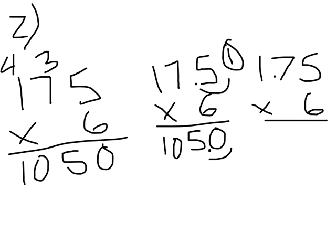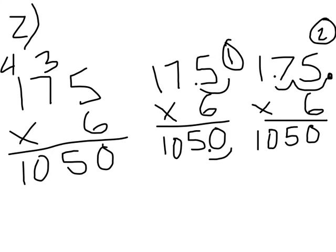Now let's do 1 and 75 hundredths times 6. How many numbers will be behind the decimal in my answer? There will be 1, 2 numbers behind the decimal. I know that 175 times 6 is 1,050. Where should I place the decimal to correctly answer this multiplication problem? I should place it between the first zero and the 5 — 10 and 50 hundredths. Two numbers go behind the decimal and my answer ends in the hundredths place.